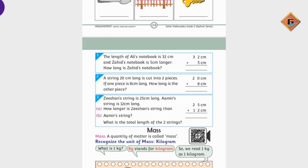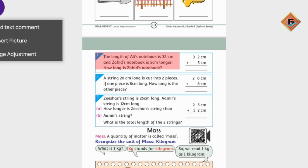On page 115, we will work on mass problems. The length of Ali's notebook is 32 cm and Zahid's notebook is 5 cm longer. How long is Zahid's notebook? So, 32 and 5. It's 7 and this is 3. 37 centimeters.